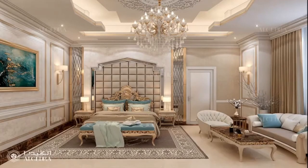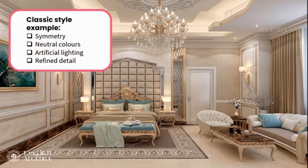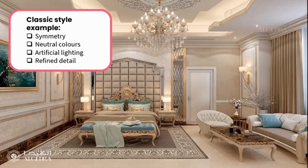Let's take a look at this example of a classically styled interior. Can you see some of the typical characteristics of classic design within this image? Firstly, it's balanced very symmetrically. We see the use of natural colors within the space — yes, there is a pop of blue, but the main color palette is natural: beiges, whites, and lighter tones. We see a strong use of artificial lighting — you can see the chandelier within the space, as well as wall lamps and side lamps. And there is quite a lot of refined detailing: on the wall panels, above the bed, and around the door frames.